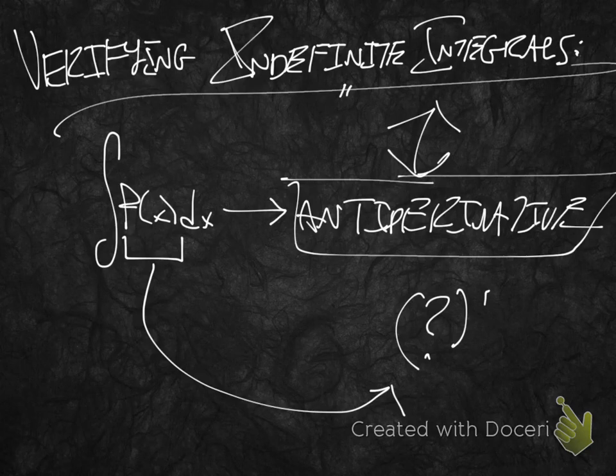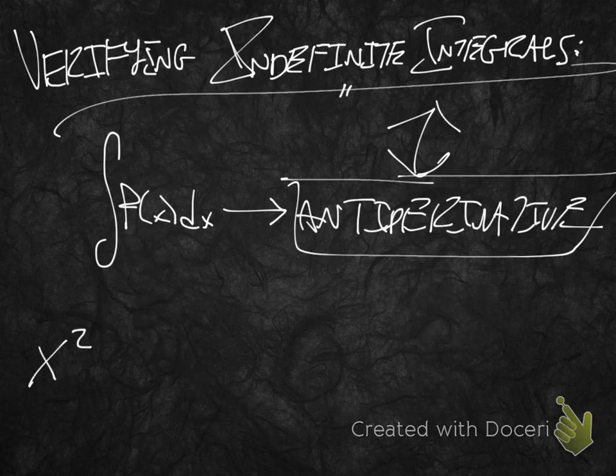So a great example that will be sharp in everyone's mind is, okay, what is the derivative of x squared? Well, if we take the prime of x squared, we're going to get 2x.